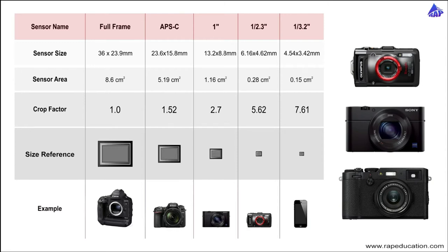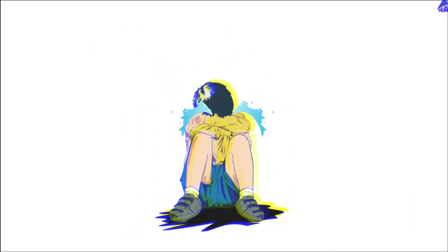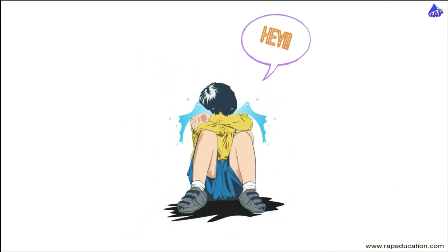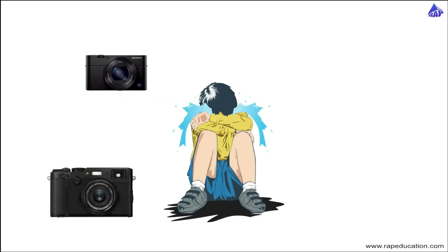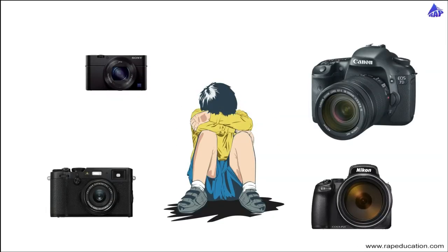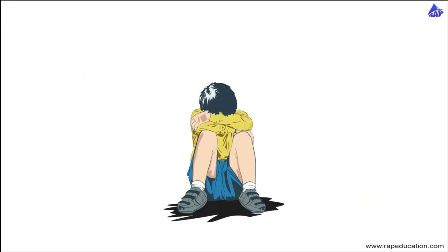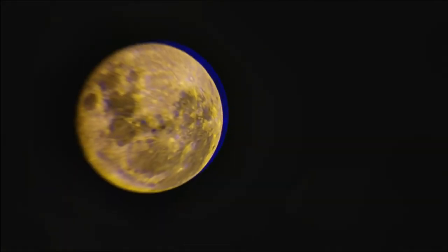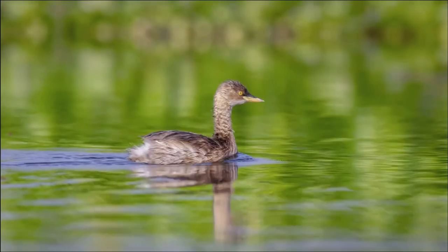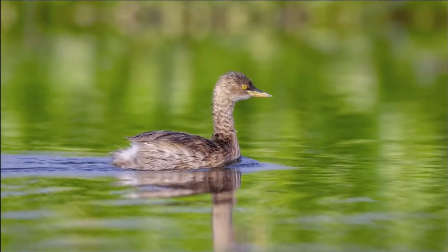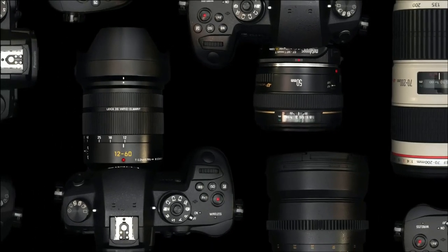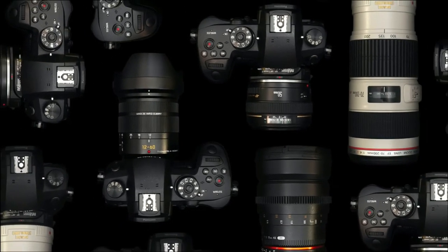We can't use the standard 35mm format sensor everywhere because the market also has significant demand for budget cameras. That is why, to reduce the overall cost, different brands crop the actual image sensor at different sizes. You have to choose the most suitable one as per your budget and requirement. Don't be upset if you can't afford a full frame camera — crop sensor cameras are also excellent for some photography genres, especially where significant zooming is required. You need to know the fundamental differences of these uniquely sized sensors.